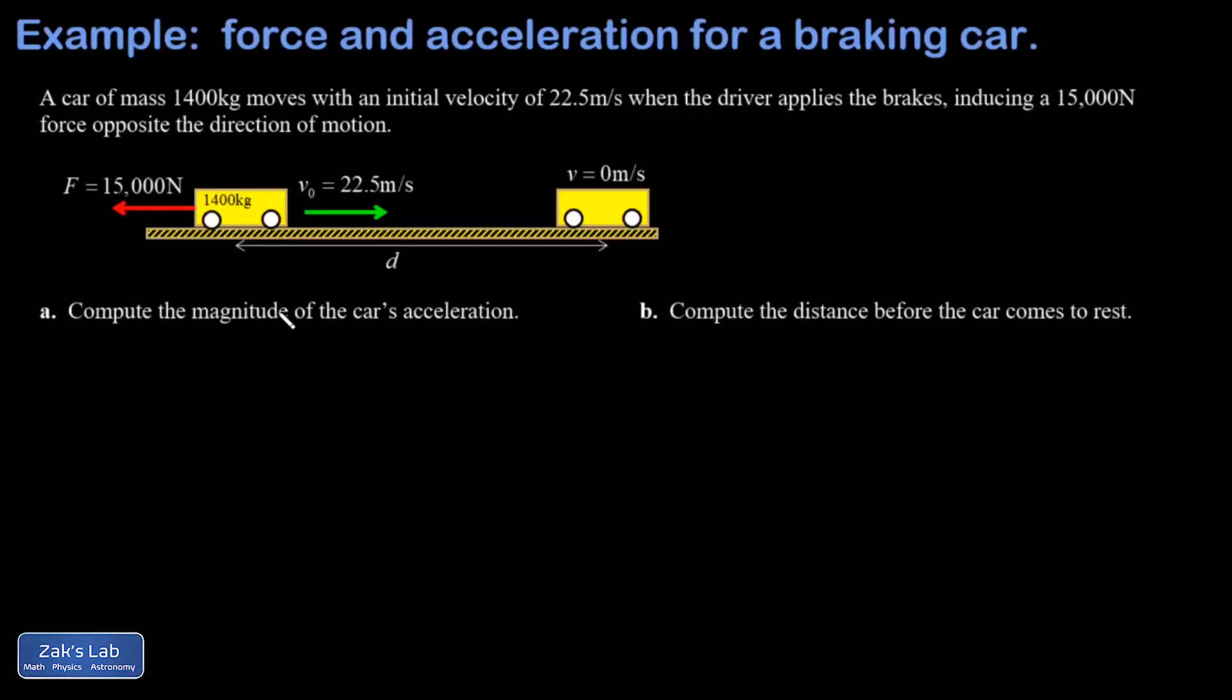In this problem we're combining Newton's second law with a little kinematics question. I have a car with a known initial velocity of 22.5 meters per second. The mass is given as 1400 kilograms.